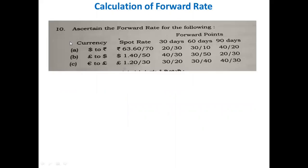We take one problem from the question paper. Ascertain the forward rate for the following currencies: dollar to rupees, pound to dollar, and euro to dollar. The spot rate for dollar to rupees is 63.60 bar 63.70 — that means 63.60 is the bid price and 63.70 is the ask price. The 30-day forward points are 20 bar 30, the 60-day forward points are 30 bar 10, and the 90-day forward points are 40 bar 20.